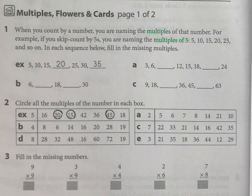So multiples of 5 include 5, 10, 15, 20, 25 — just like skip counting. So for A, B, and C, just fill in the numbers that would be multiples.